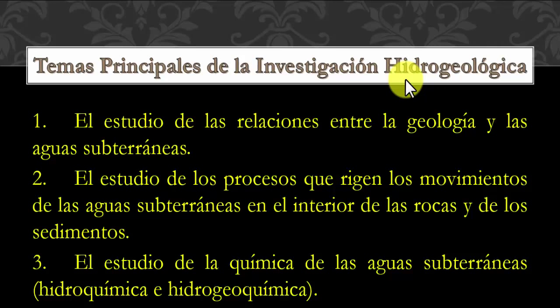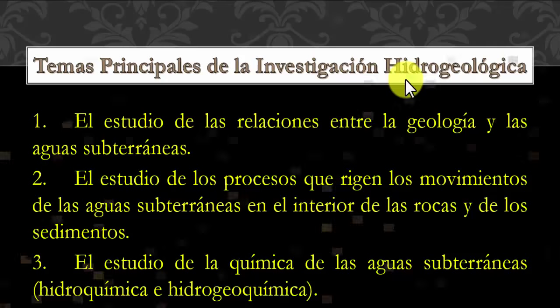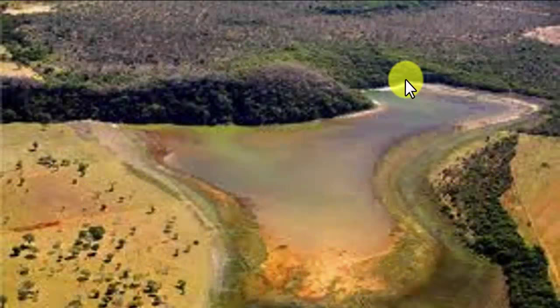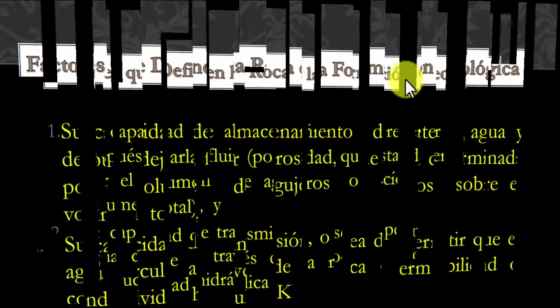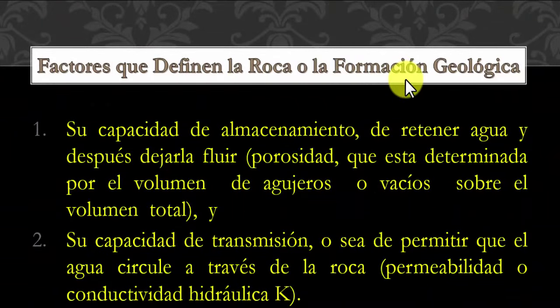Aquí tenemos otro tipo de formación: un paisaje con vegetaciones diversas, acumulaciones y colores que tienen que ver con los tipos de roca y de suelo. ¿Cuáles son los factores que definen la roca y la formación geológica? Primero, su capacidad de almacenamiento: retener agua y después dejar fluir —es decir, la porosidad, determinada por el volumen de huecos o vacíos sobre el volumen total.